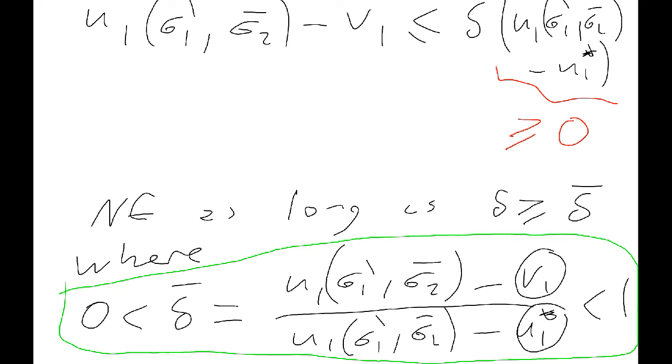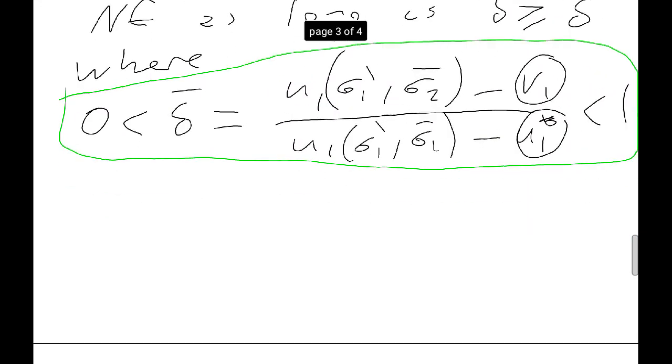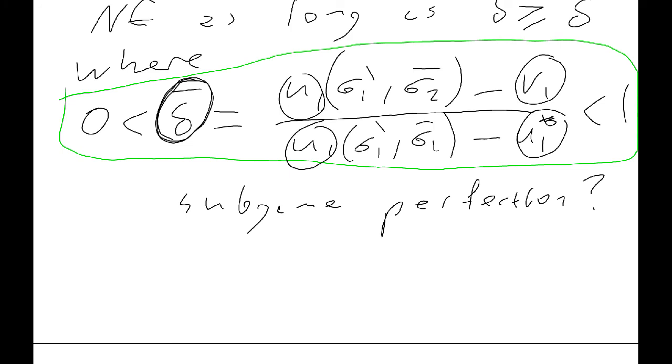And that more or less proves our result because we have found a delta that as long as we're bigger than that delta, we're fine. The final part of this proof is just to check subgame perfection. Well, the final part would be just to note that the same holds for player two. Nothing we have done is particular for player two. And we just need to be a bit careful with the delta bars and the u1 and the u2.